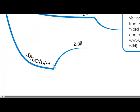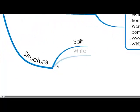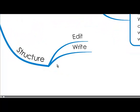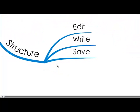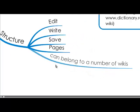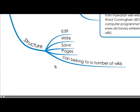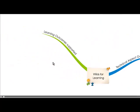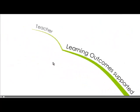So what is the structure? Well, you get on it, you edit it, you write, then you save — and you can actually have multiple pages. It's kind of like a website in that you can have multiple pages and just get in there and change it. And one person can belong to a number of wikis.